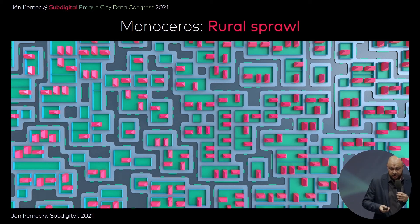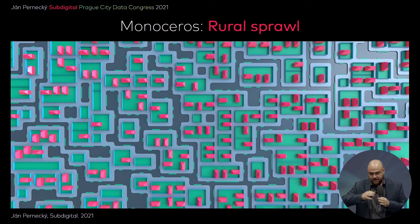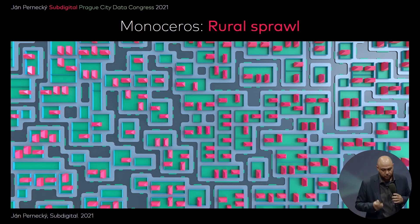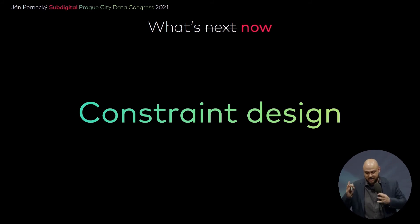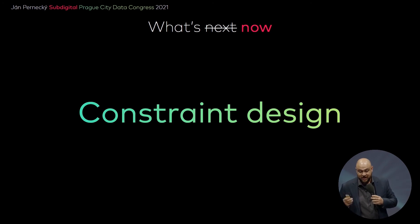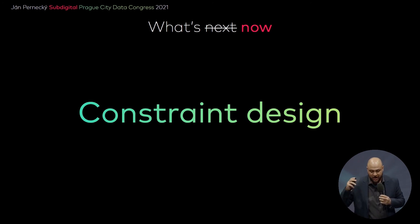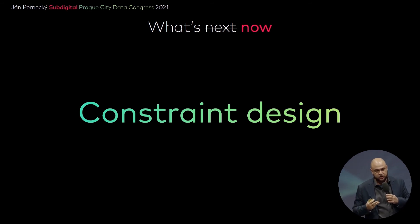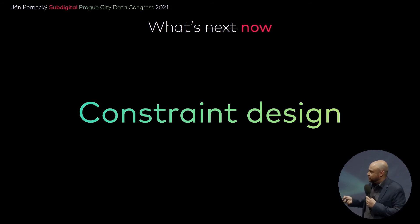When we realized all these things, we realized this could be a new approach to architecture or at least computational design. I'd like to introduce a new term I'm trying to establish theoretically: constraint design. As architects, we are not only designing what is possible — we are also designing what shouldn't be possible, adding more and more constraints and letting the creative machine create something. We harness the machine by adding constraints until there is only one viable solution.